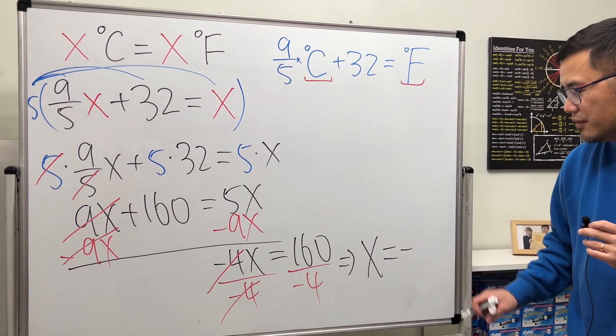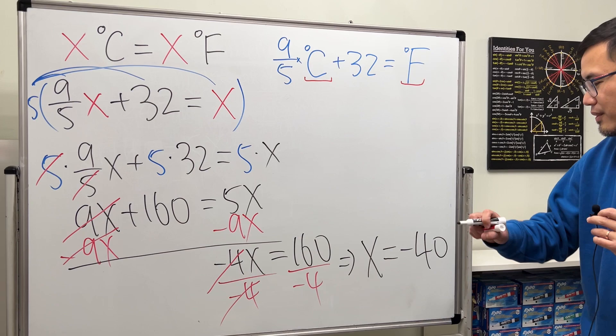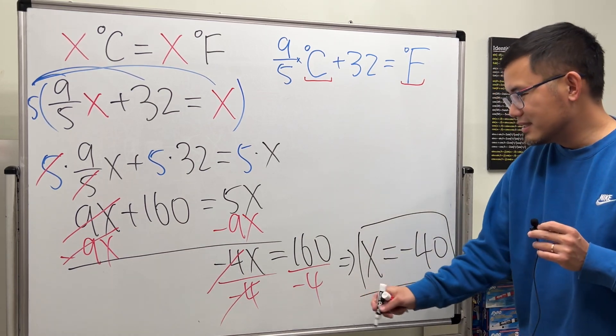Positive 160 divided by negative 4. Positive divided by negative, we get negative. 160 divided by 4, we get negative 40. So this right here is the answer.